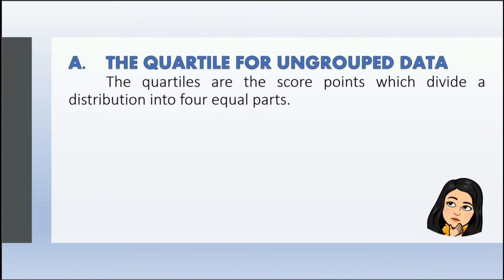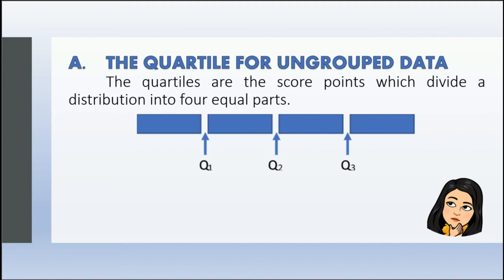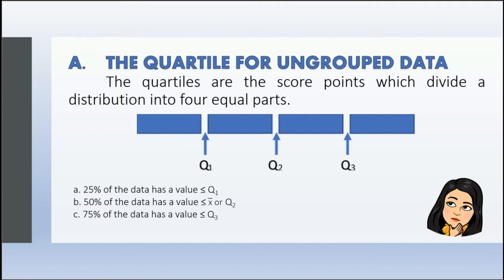Let's talk about the quartile for ungrouped data first. The quartiles are the score points which divide a distribution into 4 equal parts — the data are divided into 4 equal parts. We have 3 score points: quartile 1, quartile 2, and quartile 3. When we say quartile 1, 25% of the data has a value less than or equal to Q1. Quartile 2 means 50% of the data has a value less than or equal to Q2. And for quartile 3, 75% of the data has a value less than or equal to Q3.